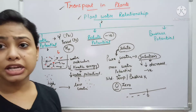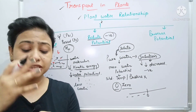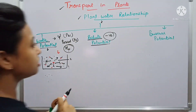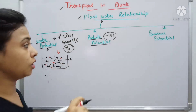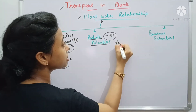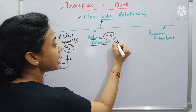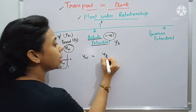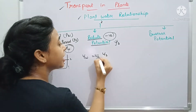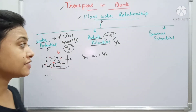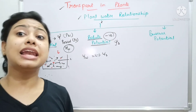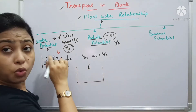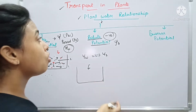Solute potential is the potential that has the capacity to decrease water potential. At atmospheric pressure, solute potential and water potential are equal, but the solute potential always carries a negative sign. If more solute is added, there is less free water, so solute potential becomes more negative — i.e., decreases.